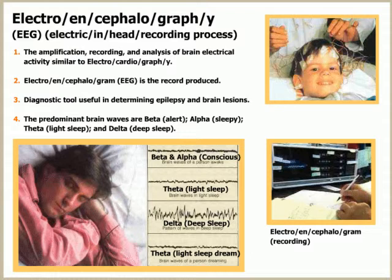Predominant brain waves produced are beta waves, alpha waves, theta waves, and delta waves. Remember, beta waves are dominant during the conscious thinking process. Alpha is a very relaxed brain wave series, theta brain waves are predominant during light sleep, and delta brain waves are predominant during deep sleep.